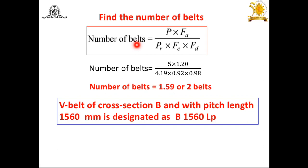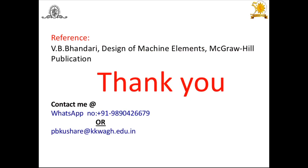In the last step, we find the number of belts: N = (P × FA) / (PR × FC × FD) = (5 × 1.2) / (4.19 × 0.92 × 0.98) = 1.59, which rounds up to 2 belts. The selected V-Belt designation is B1560LP — cross-section B, pitch length 1560 mm. This problem is taken from Vivandar's book. For queries, contact 9890426679 or email pbkushare at the red kkwalk.edu.in. Thank you.